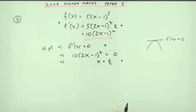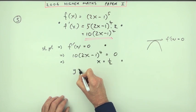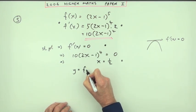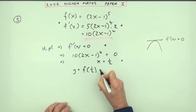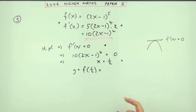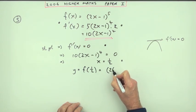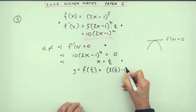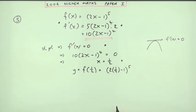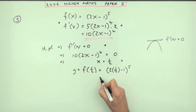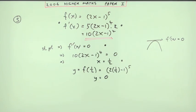The question asks for the stationary point, so you need the y-coordinate too. The y-coordinate is the value of the function at x = 1/2: substituting gives (2 × 1/2 − 1)^5 = 0^5 = 0. So the y-coordinate is zero — that's the fifth mark.